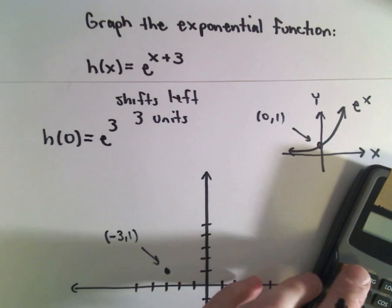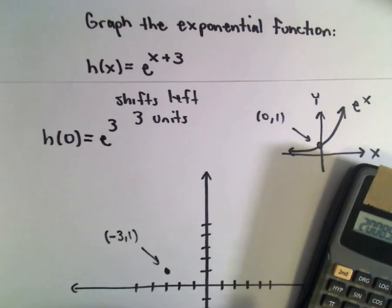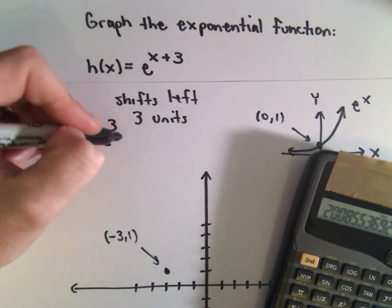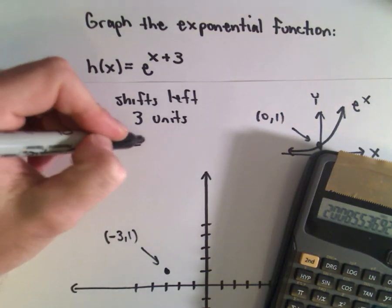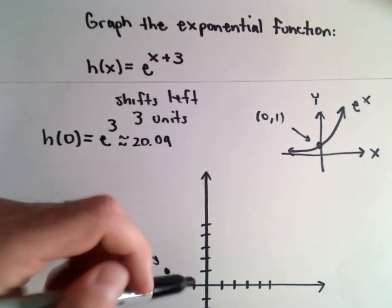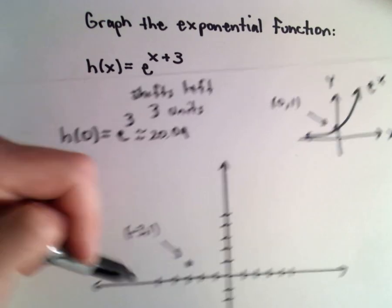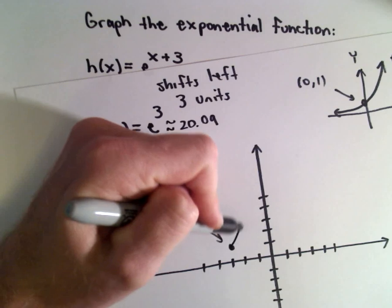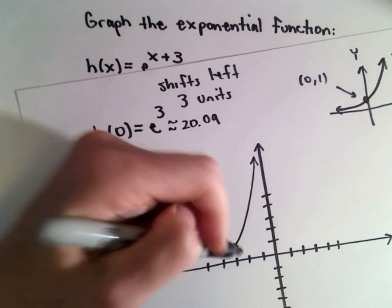Let's see, so e to the third power is actually a little bit bigger than 20. So you can see that this graph gets really large really quickly. So I'm going to make it just get big quickly.